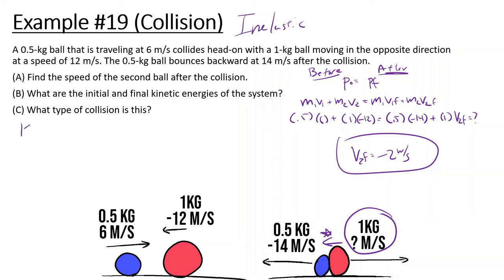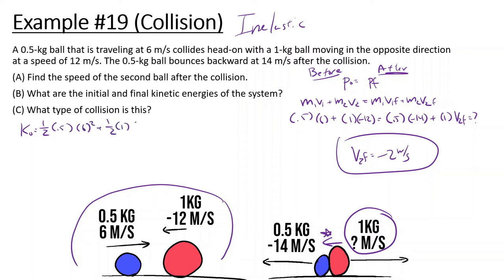Let's look at the kinetic energy initial — we're going to look at this before they collide. So it's one-half times the mass of the first one, 0.5, times velocity 6 squared, plus one-half times the mass of the second one, 1, times velocity negative 12 squared. Working that out — 12 squared times 0.5 plus 6 squared times 0.5 — and we get around 81 joules. So before they collide, they had 81 joules.